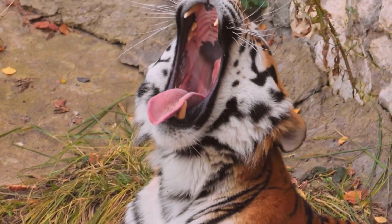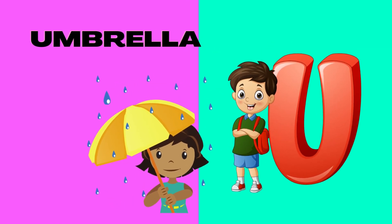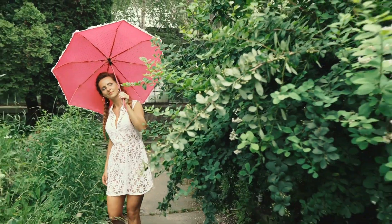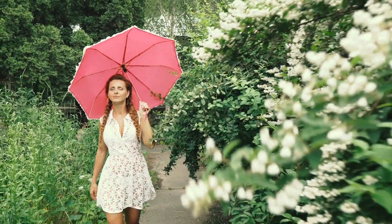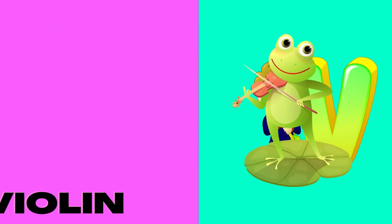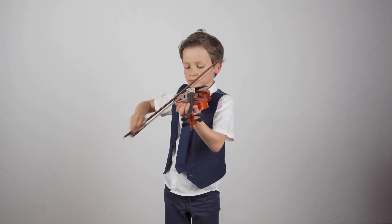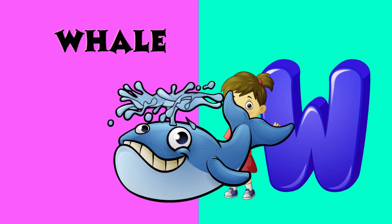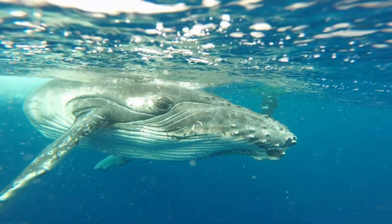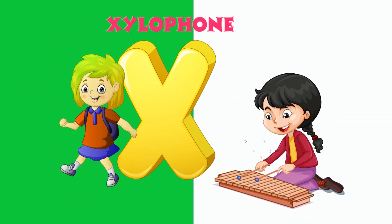U is for Umbrella. U-Umbrella, U-Umbrella, U-Umbrella. V is for Violin. V-Violin, V-Violin, V-Violin. W is for Whale. W-Whale, W-Whale, W-Whale.